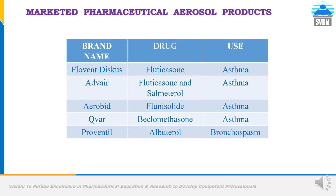Now we will look at different marketed metered dose inhalers available in the market. The brand names include: Flovent Diskus — that is fluticasone — used for asthma; Advair — fluticasone and salmeterol — also used for asthma; Aerobi — flunisolide — used for asthma; Qvar — beclomethasone — used for asthma; and Proventil — albuterol — generally used for bronchospasm. Metered dose inhalers are mostly used for asthma or bronchospasm.